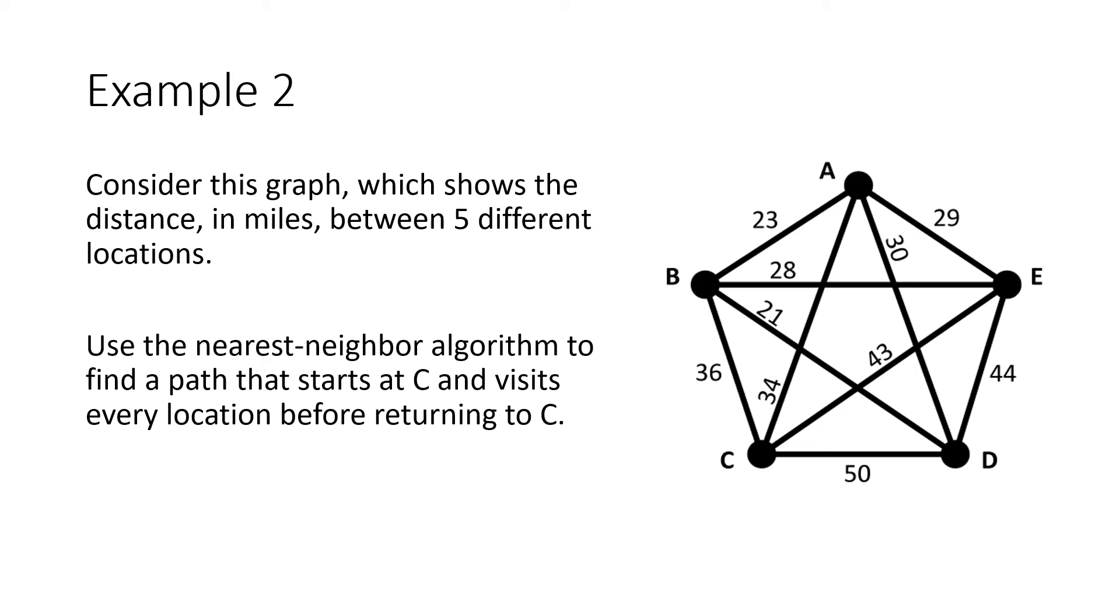All right, let's try another example. So let's consider this graph, which shows the distance in miles between five different locations. And let's use the nearest neighbor algorithm to find a path that starts at C, visits every location, and then returns to C. If you want to try this on your own before watching me walk through it step by step, go ahead and pause the video and see if you can work this out.